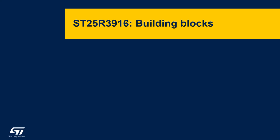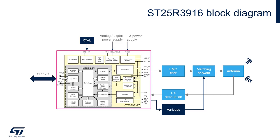In this module, we'll take a look at the internal functional blocks that make up the ST25R3916. We'll briefly describe how they operate and their primary uses. In a previous module, we described the output circuit and how it functions. In addition to the output circuit and the serial communication to the IC, one must also apply a crystal and analog and digital voltage supplies.